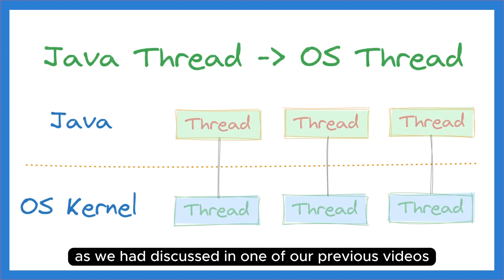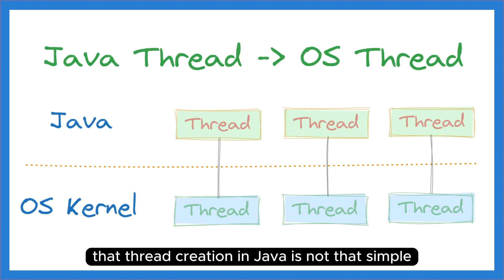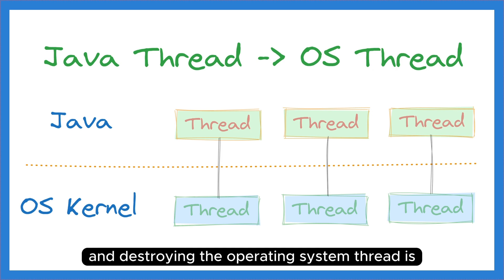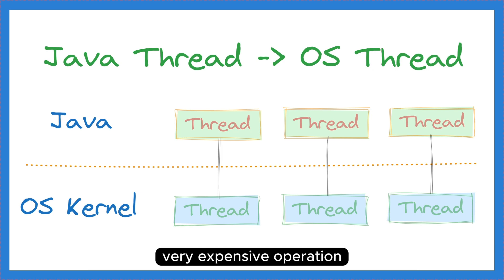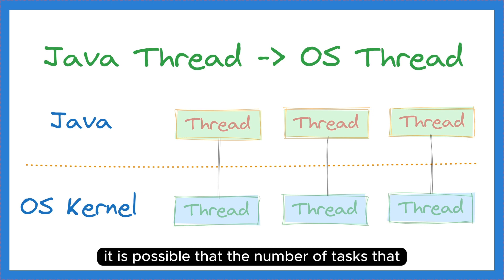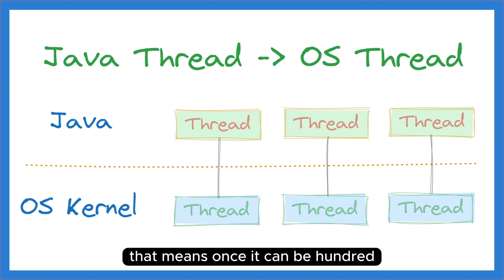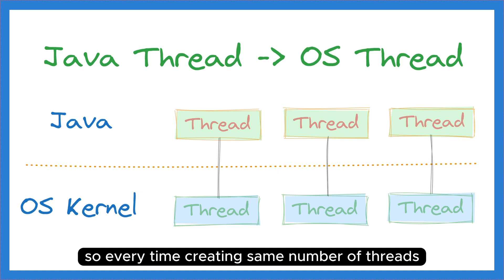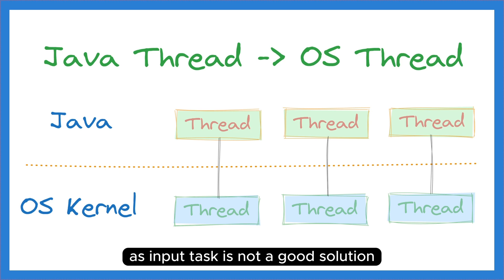As we discussed in one of our previous videos, thread creation in Java is not that simple. One Java thread corresponds to one operating system thread. Creating, managing, and destroying an operating system thread is a very expensive operation. In addition to that, the number of tasks you want to execute can vary dynamically — once it can be 100, and in the next input it can be 10 or 1000. So creating the same number of threads as input tasks every time is not a good solution.